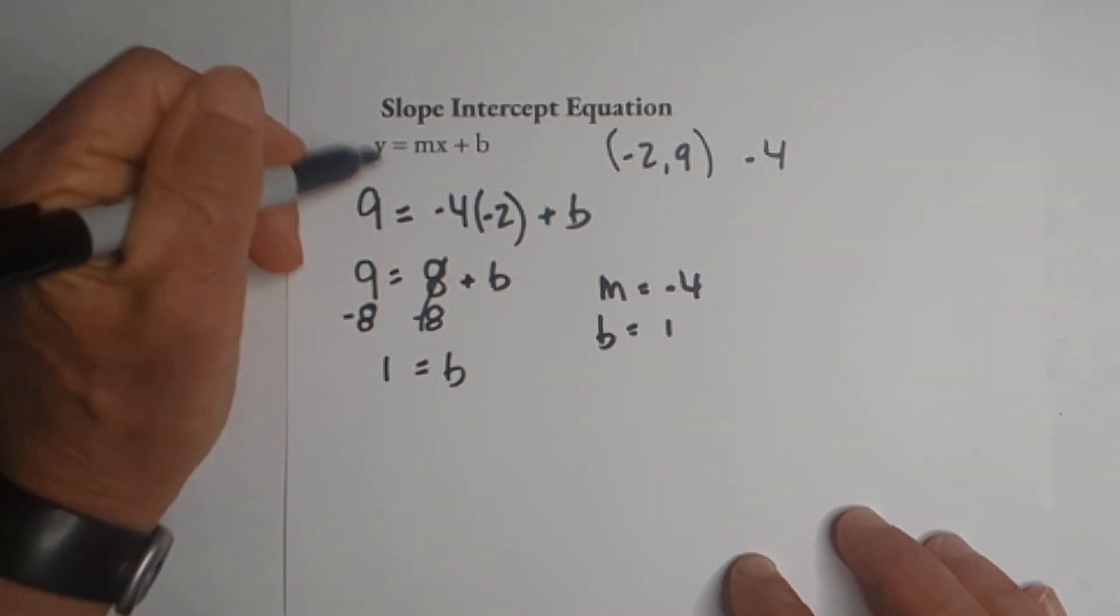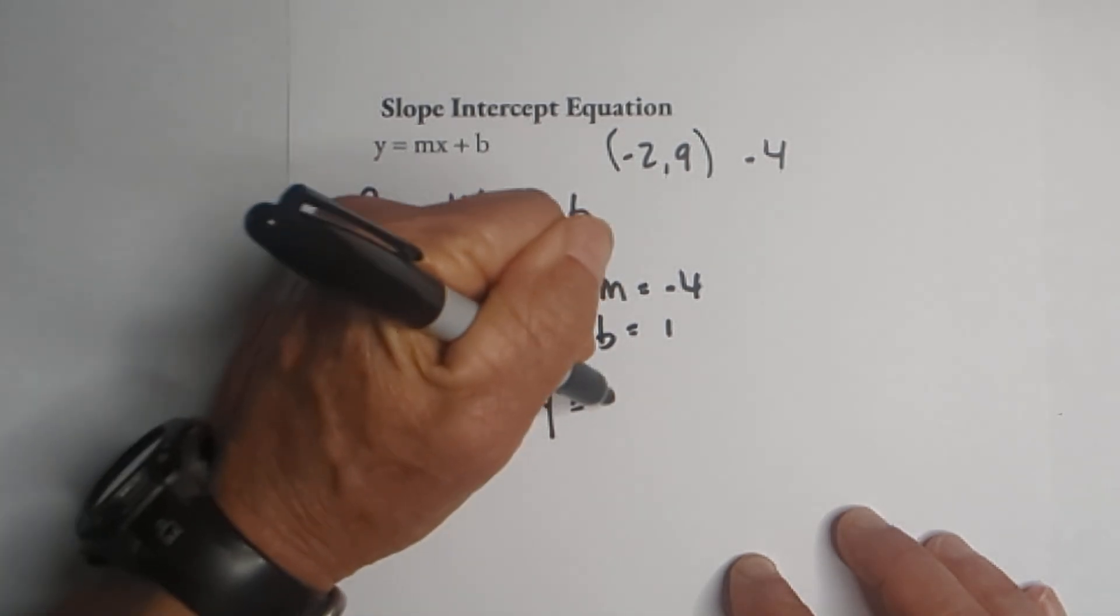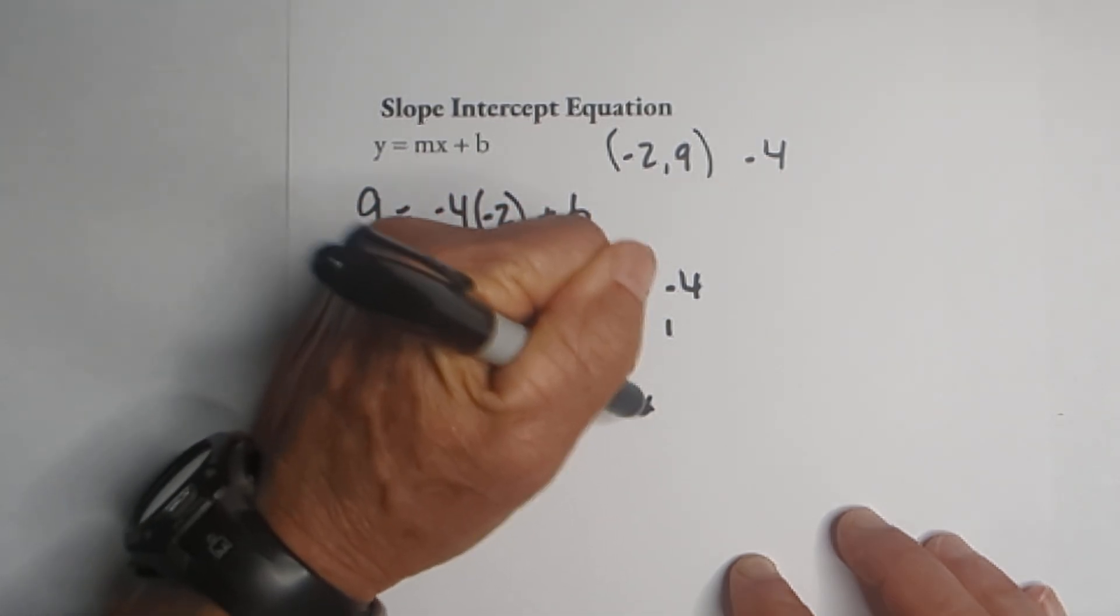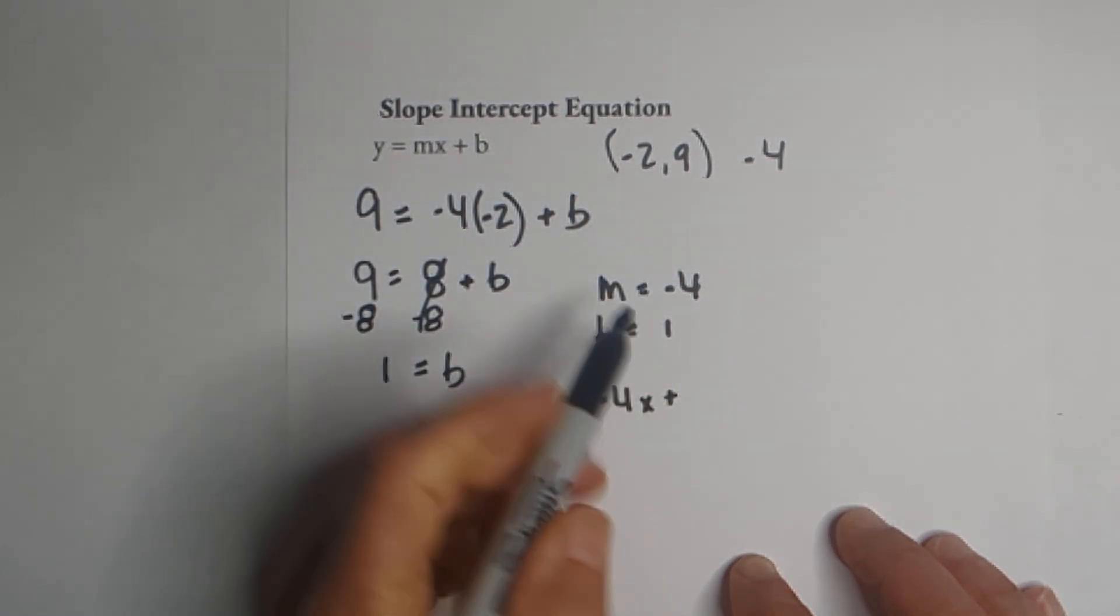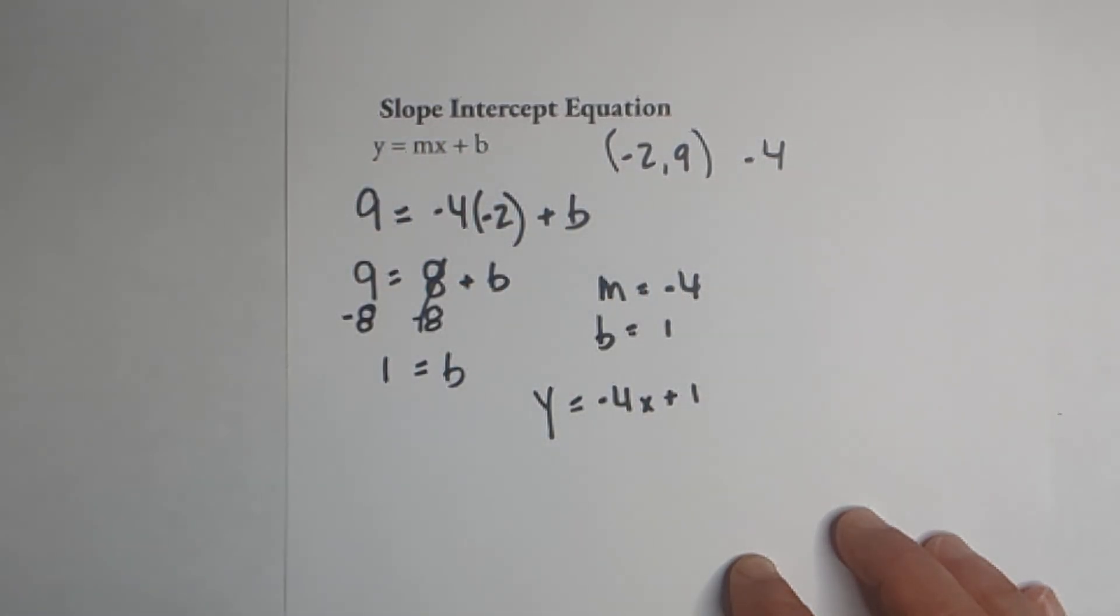So now let's just plug it into the formula: y = -4x plus b, and b is one, a positive one. And you'll notice that it's the same thing as before.